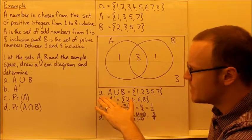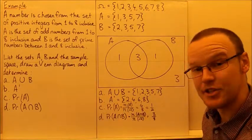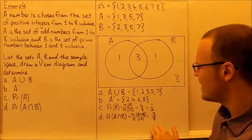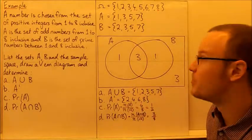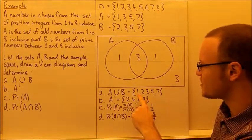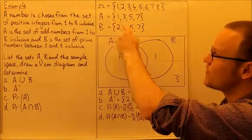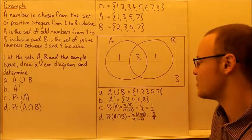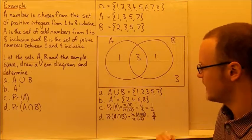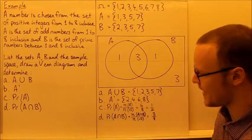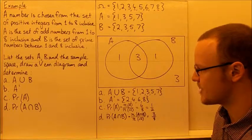The union of A and B is all of the elements in A or B or both: 1, 2, 3, 5, and 7 — all of the elements that are in A or B or both. That's our set for A union B.